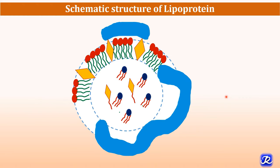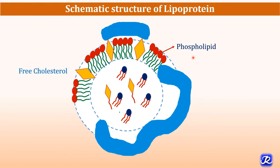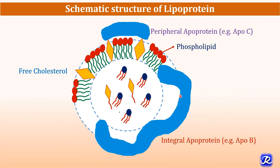Let's see the schematic structure of a lipoprotein. It is made up of an outer surface layer and a core. The outer surface layer is made up of amphipathic phospholipids. This phospholipid has a polar head that faces towards the aqueous medium and a hydrophobic tail that faces towards the core. Along with phospholipids, it has amphipathic free cholesterol. There are also peripheral apoproteins and integral apoproteins present.